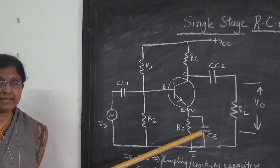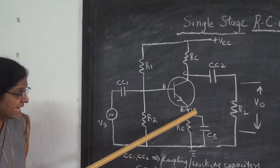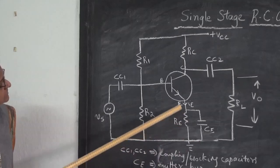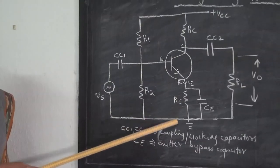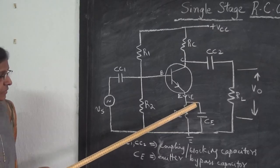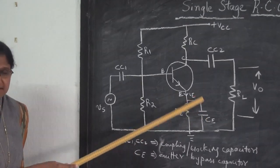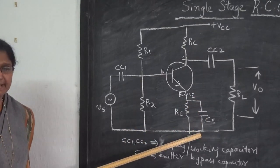CE is called the emitter bypass capacitor. In the absence of CE, some potential difference will be developed across RE. So to avoid that, we keep a bypass for AC to go to the ground by using this capacitor CE.